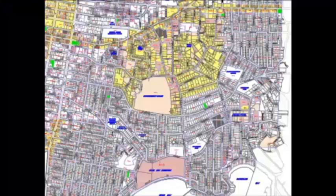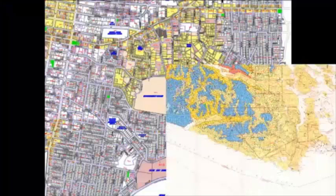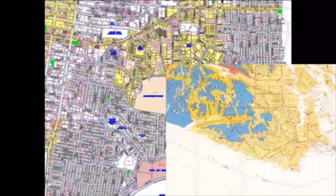See which zoning laws apply to your area, what vegetation, wildlife, and mineral occurrences appear where, and much more with maps from our collection.